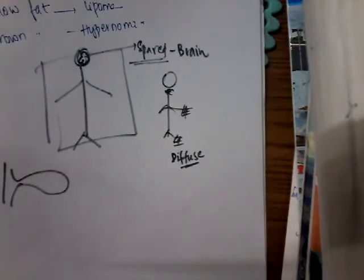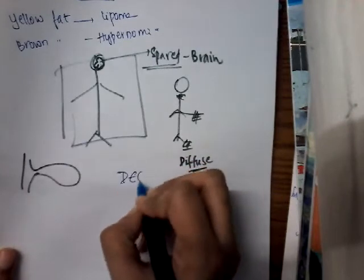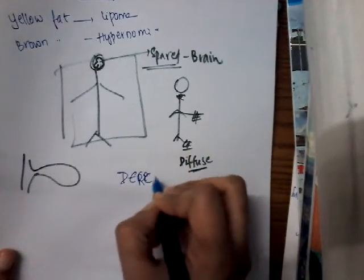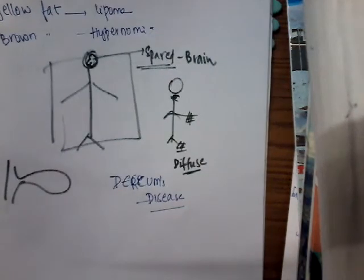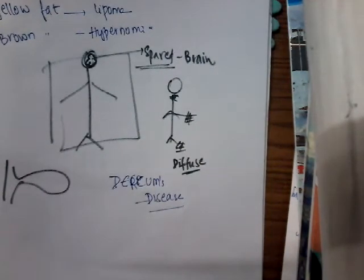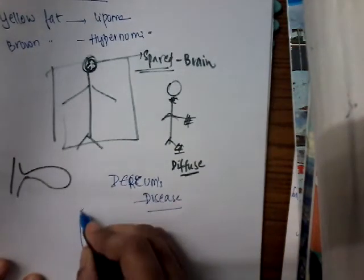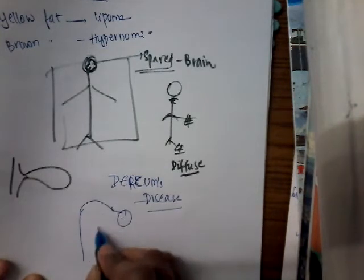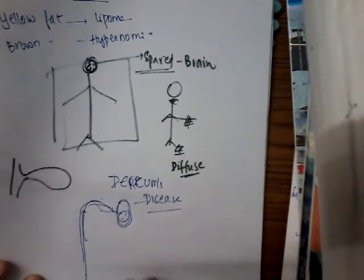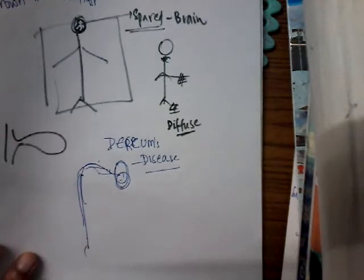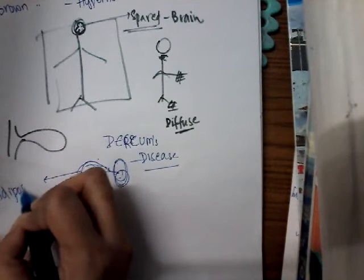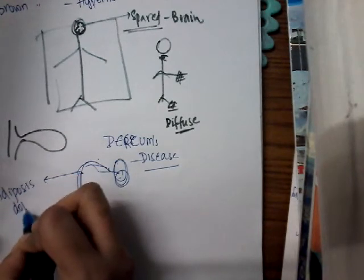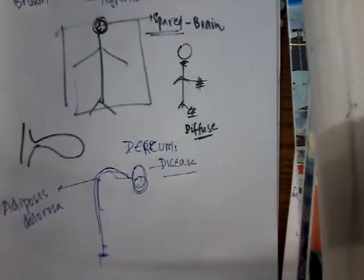There is a special type of disease called Dercum's disease. In Dercum's disease, the patient has tender fat deposition — that is lipoma — on the trunk. This tender fat deposition on the trunk is called adiposis dolorosa.